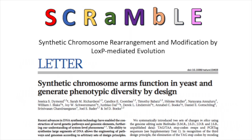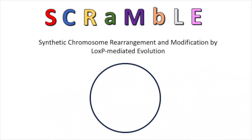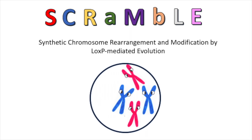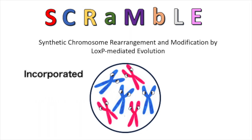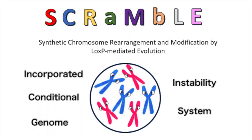The SCRAMBLE system was first described by Diamond et al. in 2011 in a paper published in Nature. This group of researchers had been involved in a project aiming to generate a wholly synthetic yeast cell through the construction of individual yeast chromosomes. They introduced SCRAMBLE as an inducible evolution system which could create a large variety of genotypes and phenotypes, describing it as an incorporated conditional genome instability system. Without the diversity generated, this synthetic chromosome would have been a duplicate of those found in nature.